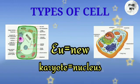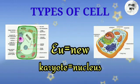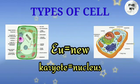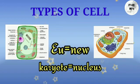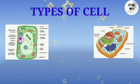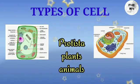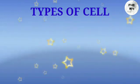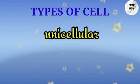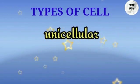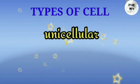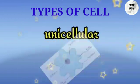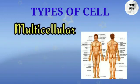In a eukaryotic cell, a proper nucleus is present and the nuclear envelope is also present. Examples include protista, plants, and animals. Depending on number of cells, two types of organisms are seen: unicellular, for example amoeba, and multicellular, for example humans.